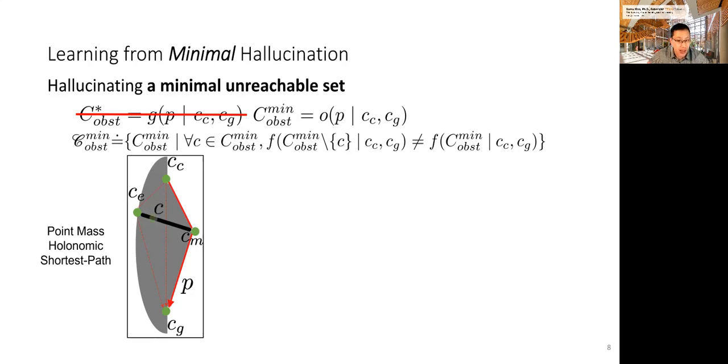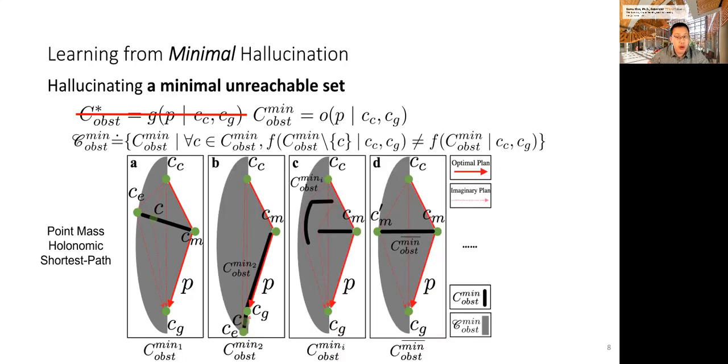Unfortunately, there are many other minimal unreachable sets as well. But fortunately, we can prove that the set of all minimal unreachable sets is the gray area, composed of a half ellipse and a triangle. You can find a detailed proof in the paper, but the main point is, if the gray area is small enough, we can probably just use one representative minimal obstacle set to represent all of them. Say, let's use the straight line C-M, C-M prime shown in figure D to represent all black lines. C-M prime is the symmetrical point of C-M with respect to C-C, C-G. We will show empirically this approximation works well in the experiment.